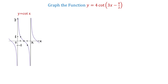In this video, we will graph the function y equals 4 cotangent of 3x minus pi over 2. Before we start, let's take a look at the graph of the basic cotangent function y equals cotangent of x.